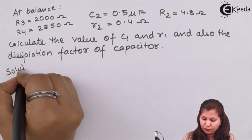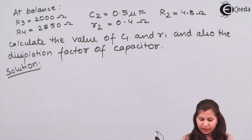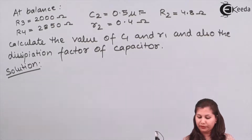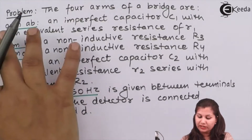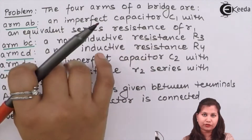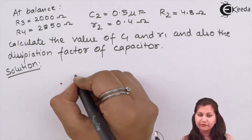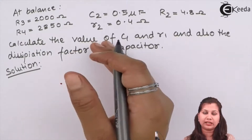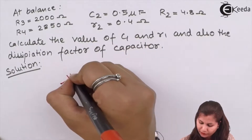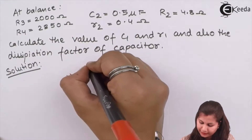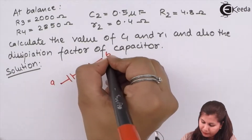First we will draw the circuit for this bridge. We are given the four arms: AB, BC, CD, and DA. Arm AB is a capacitor connected in series with an effective resistance, so we will draw a capacitor and a resistor in series with each other in arm AB.